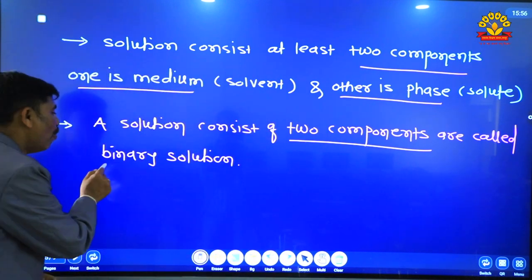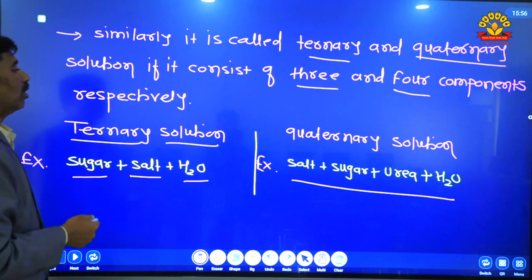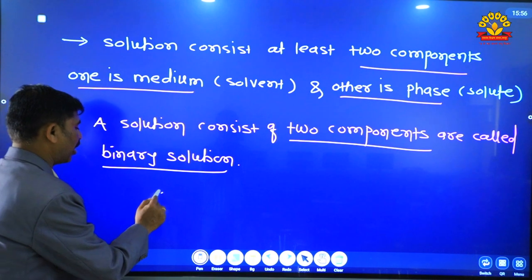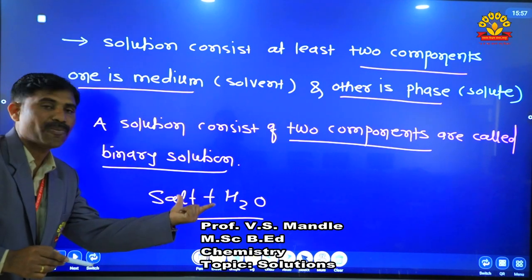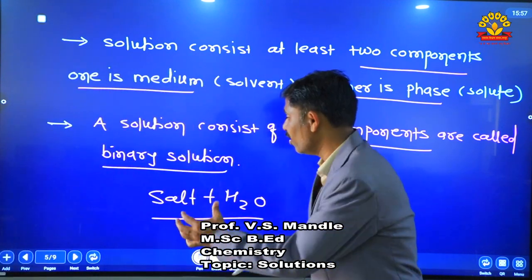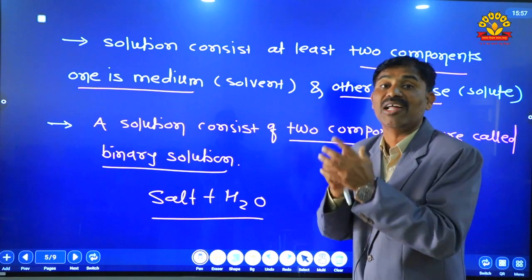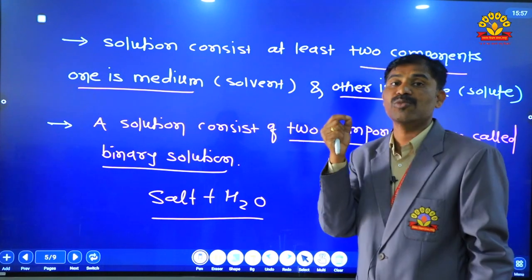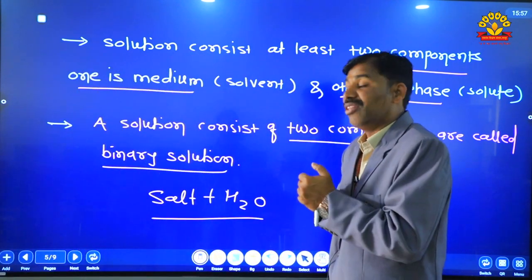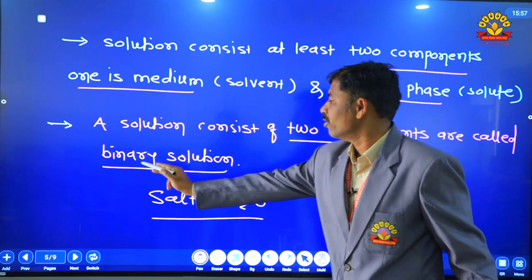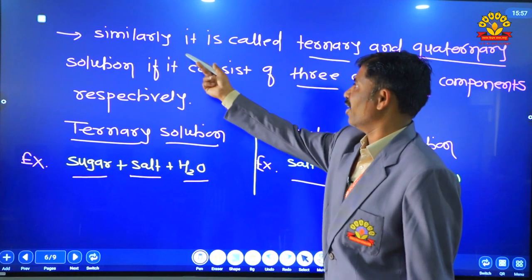A solution consisting of two components is called a binary solution. For example, salt jab paani mein mix ho jata hai toh binary solution form hota hai, kyunki isme do components hote hain — one is salt and the other is water. Ye dono components mix hone ke baad homogeneous mixture form hota hai jise hum solution kehte hain.